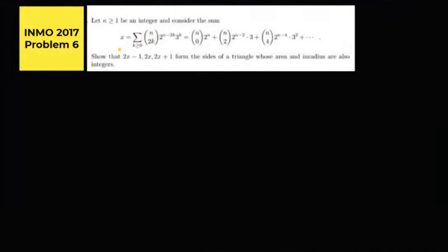It is given that n is an integer and x is equal to the summation over k ≥ 0 of C(n, 2k) times 2 to the power (n minus 2k) times 3 to the power k. We need to show that 2x minus 1, 2x, and 2x plus 1 form the sides of a triangle whose area and inradius are also integers.